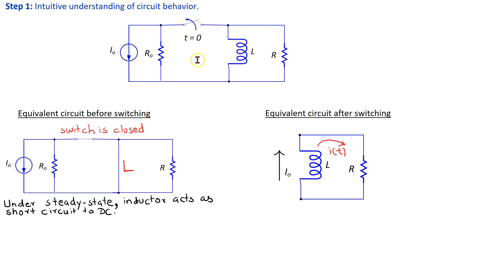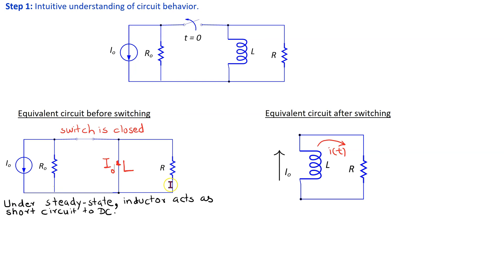The switch is initially closed and stays closed for a very long time, allowing steady-state conditions to be established. Under steady state, an inductor acts as a short circuit to DC. Therefore, this is the equivalent circuit just before switching happens, where the inductor is represented as a short circuit. Since current takes the path of least resistance, and the inductor is acting like a short circuit, all the current I0 flows through the inductor and no current flows through R0 and R. Under steady state, the energy stored in the inductor is (1/2)LI0².